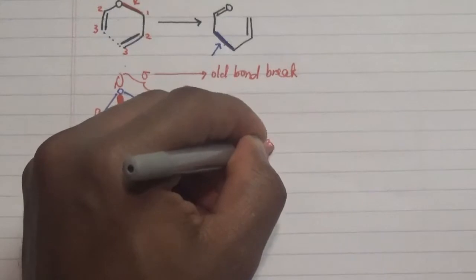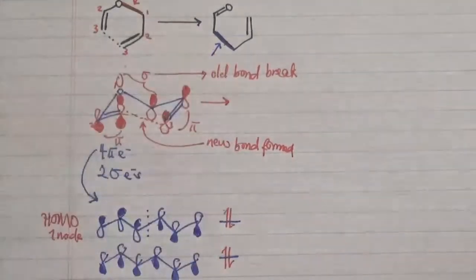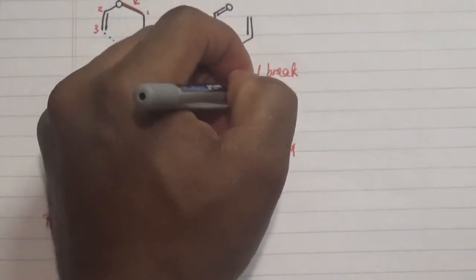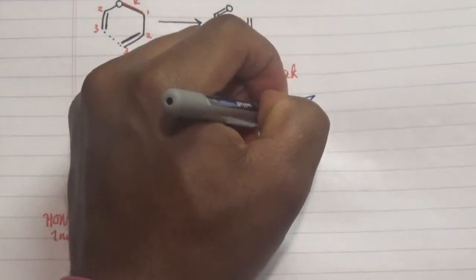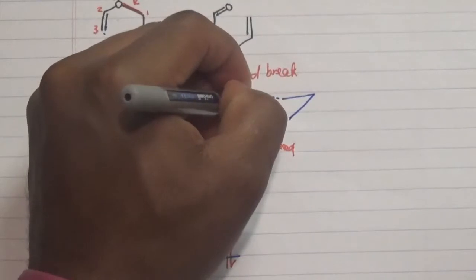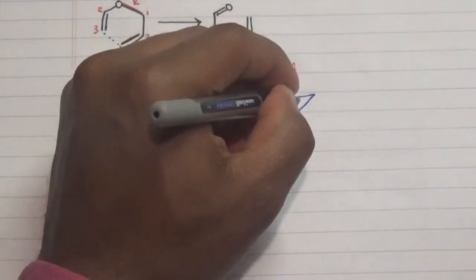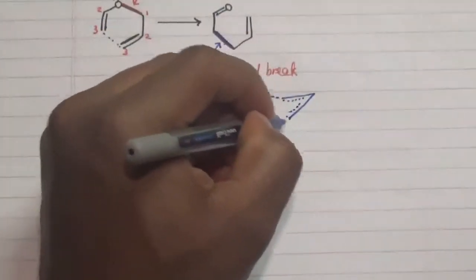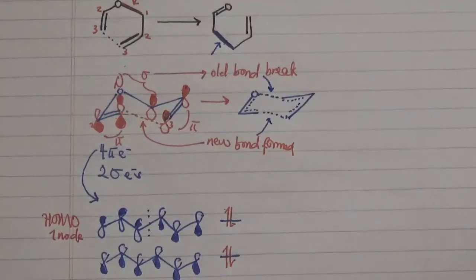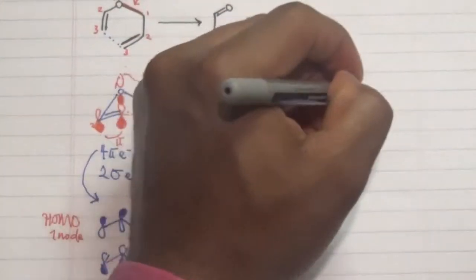Now drawing the transition state: the oxygen is bonded to one carbon with a partial bond to another carbon, revealing bond breakage as electrons are delocalized. On the other side, electrons are delocalized and the new bond is being formed at the 3,3-position. This transition state, which has a chair conformation, reveals that it leads to the formation of our product.